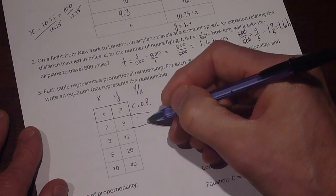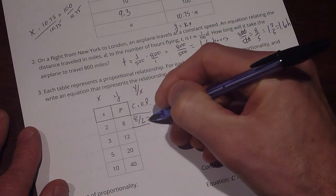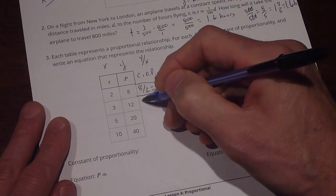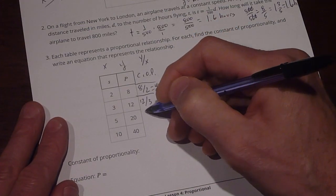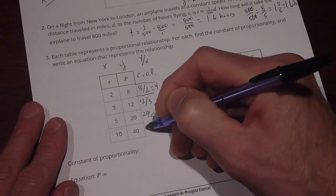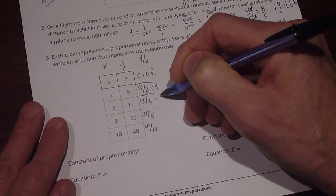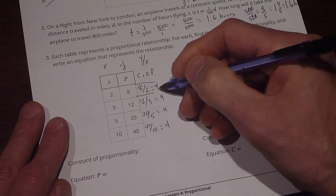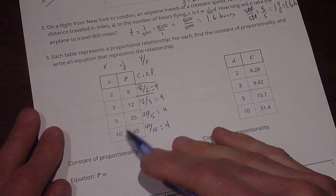So here, if we look at it, we've got 8 divided by 2, which equals 4. It should be the same for all of these values as the table moves down. 12 divided by 3, 20 divided by 5, and 40 divided by 10. And those equal 4. So the constant of proportionality is going to equal 4 for this table.